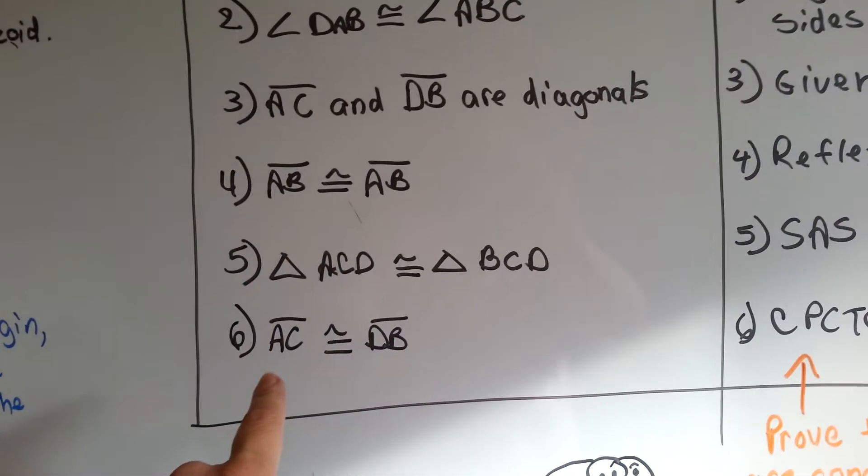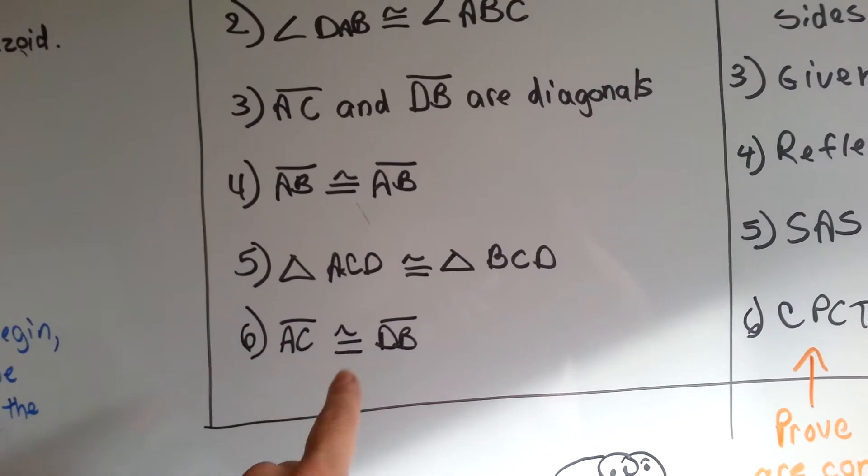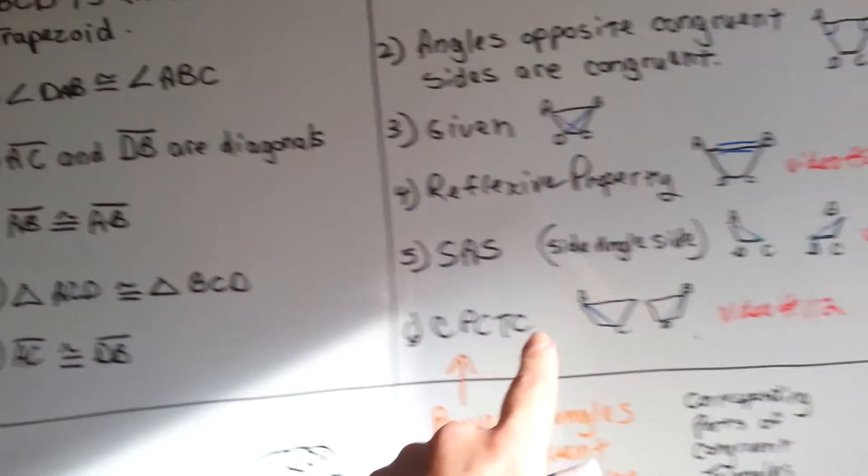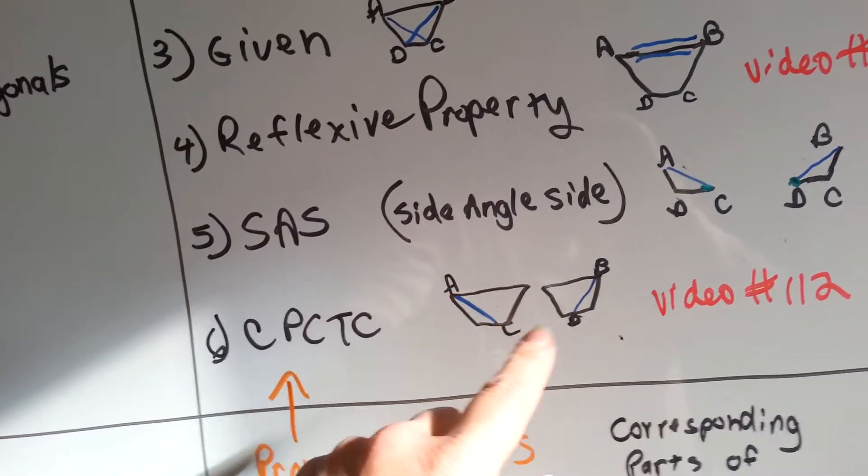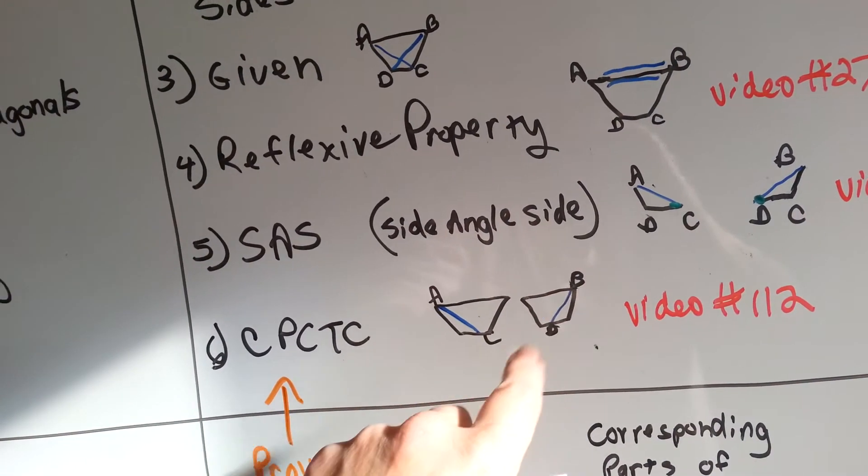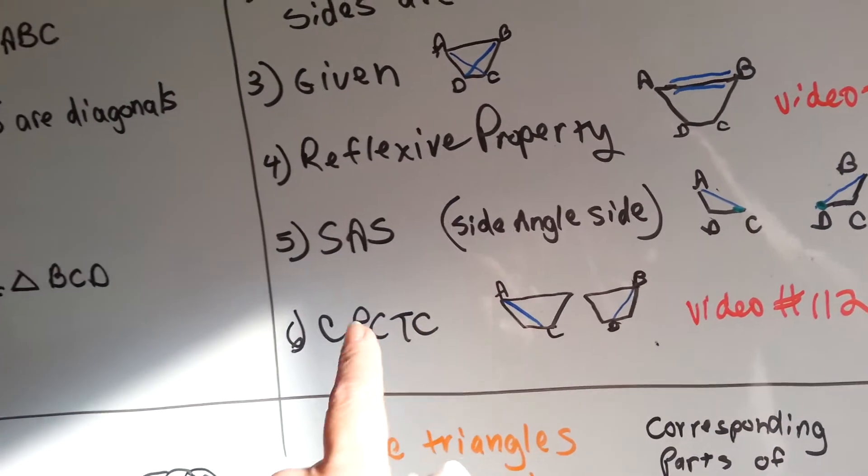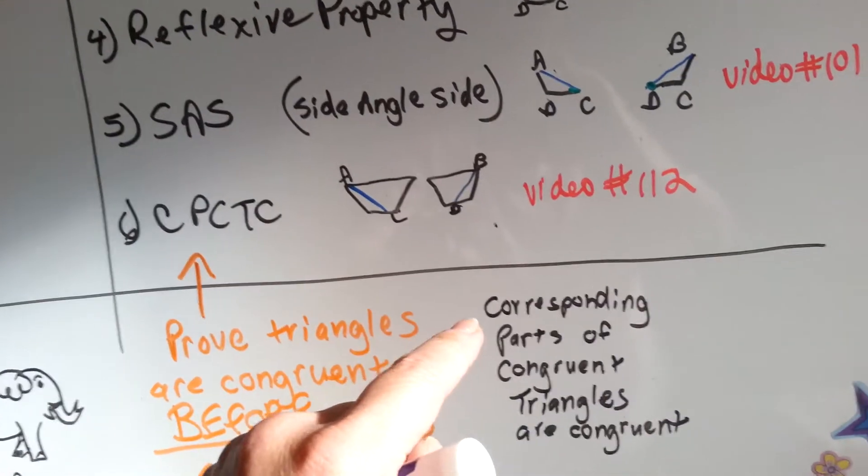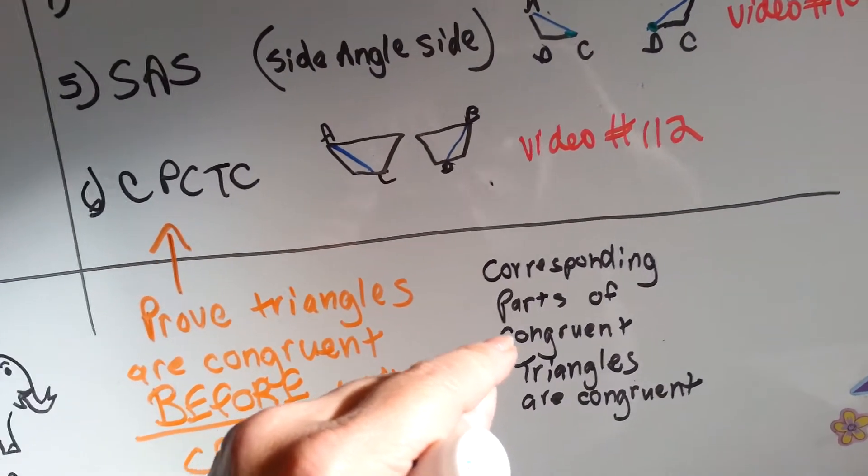So the last thing we write is that line AC is congruent to DB, which is what we're trying to prove. AC is congruent to DB or BD because of CPCTC, which is in video number 112. That's corresponding parts of congruent triangles are congruent.